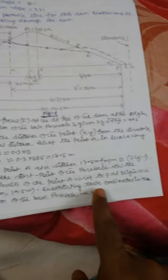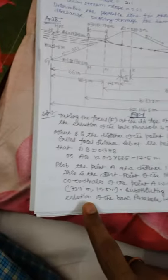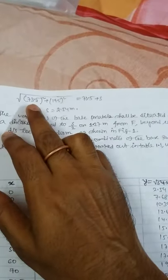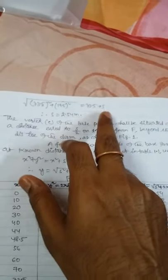Substituting these ordinates in the equation of the base parabola, we get: root over 73.5 square plus 19.5 square equals 73.5 plus s equals 2.5 meter.